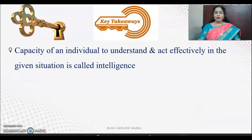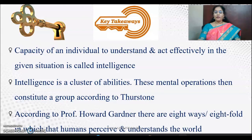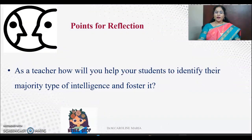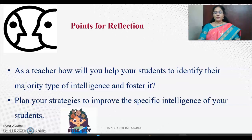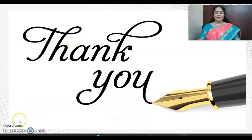Key takeaway messages: the capacity of an individual to understand and act effectively in a given situation is called intelligence. Intelligence is a cluster of abilities — these mental operations constitute a group according to Thurston. According to Howard Gardner, there are eight ways or eightfold of intelligence through which humans perceive and understand the world. As a teacher, reflect on how you will help your students identify their majority type of intelligence and foster it — plan strategies to improve the specific intelligence of your students. For further learning, kindly use the provided links and books. Thank you for listening and wish you all good luck.